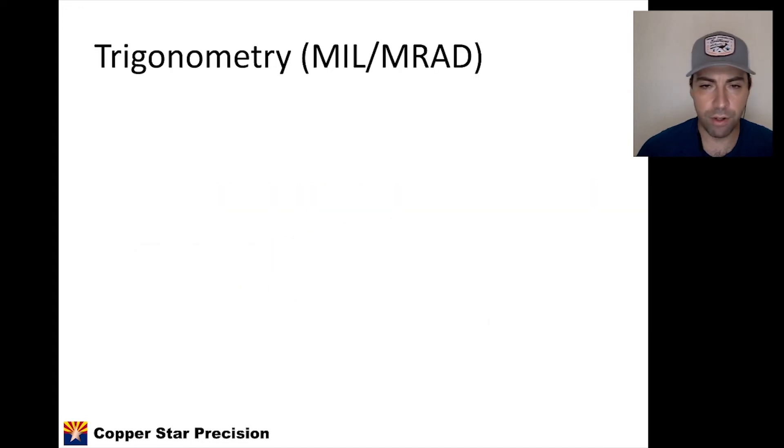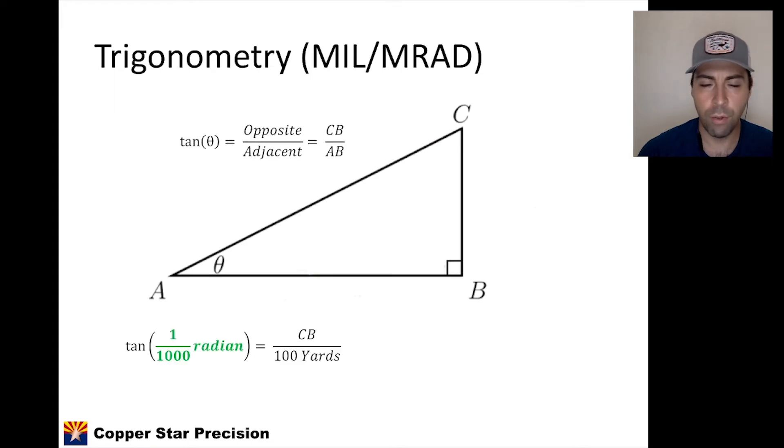So let's talk about milliradians or MRADs, mils. We're going to do the same exact thing, except here we're going to substitute the 1/1000th of a radian in for our degrees. And when we do the same calculation for the same 100 yards, 1 milliradian, 1 mil, at 100 yards is 3.6 inches.